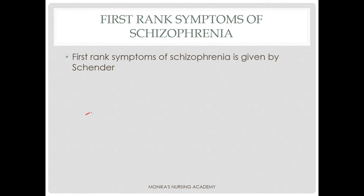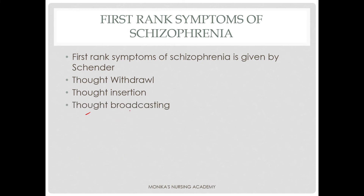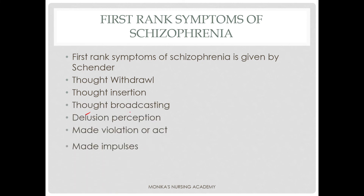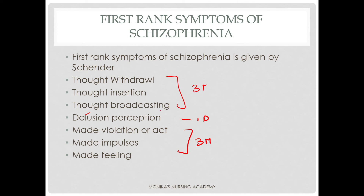Next we will discuss the first rank symptoms of schizophrenia, which were given by Schneider. These include: thought withdrawal, thought insertion, thought broadcasting, delusional perception, made violation, made impulses, and made feelings — remembered as T3, D, and 3M. Thought withdrawal means the patient feels someone is removing their thoughts from their mind. Thought insertion means someone is putting thoughts into their mind. Thought broadcasting means everyone gets to know about their thoughts before they do. Made violation and made impulses mean the patient feels someone is making them cause violations or perform acts — the impulses do not feel self-generated. Made feelings means the patient feels someone else is generating and sending feelings into them.